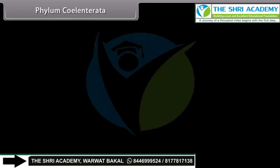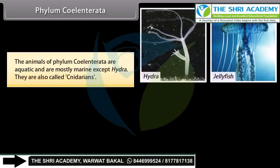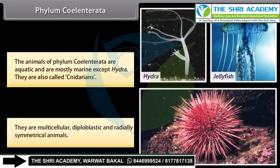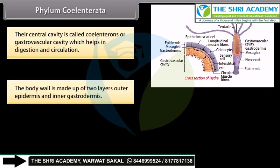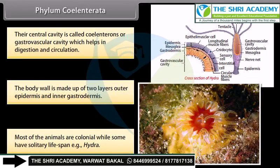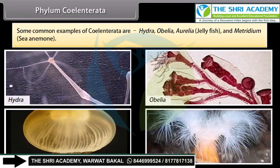Phylum Coelentrata. Coelentrata is derived from Greek words: koilos, meaning hollow, plus enteron, meaning gut. The animals of Phylum Coelentrata are aquatic and mostly marine except Hydra. They are also called cnidarians. They are multicellular, diploblastic, and radially symmetrical animals. Their central cavity is called the coelenteron or gastrovascular cavity, which helps in digestion and circulation. The body wall is made up of two layers: outer epidermis and inner gastrodermis. Most animals are colonial, while some have a solitary lifespan, that is Hydra. Common examples include Hydra, Obelia, Aurelia, jellyfish, and Metridium (sea anemone).